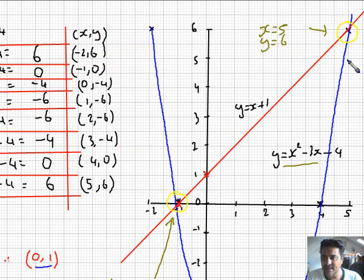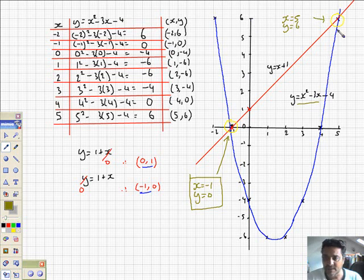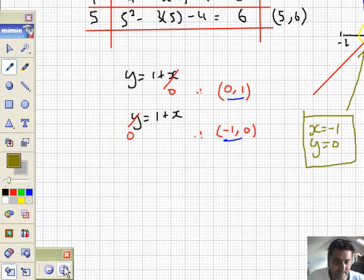It's a little bit messy in the exam to start drawing dotted lines all over the place, so I'm not going to do that. These are the two solutions: x is minus 1, y is 0, and x is 5, y is 6. That's 1c.